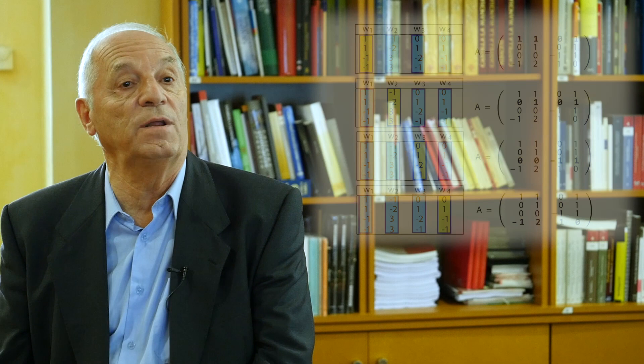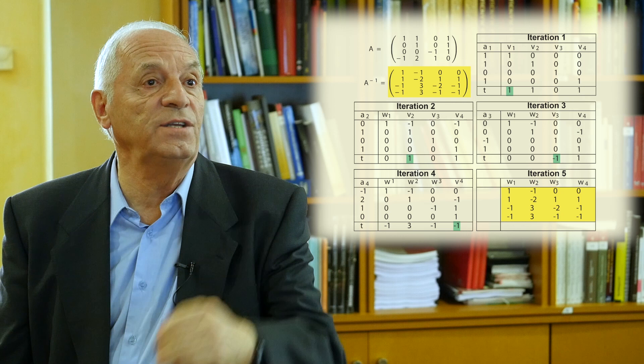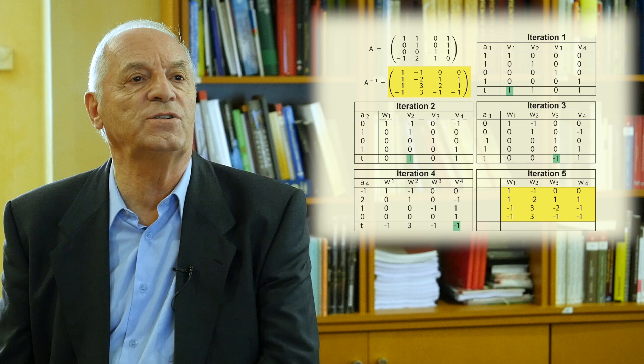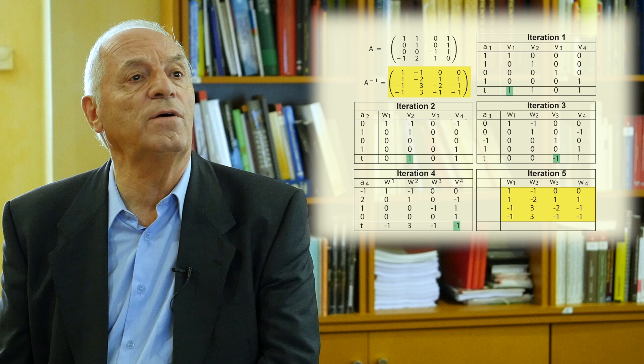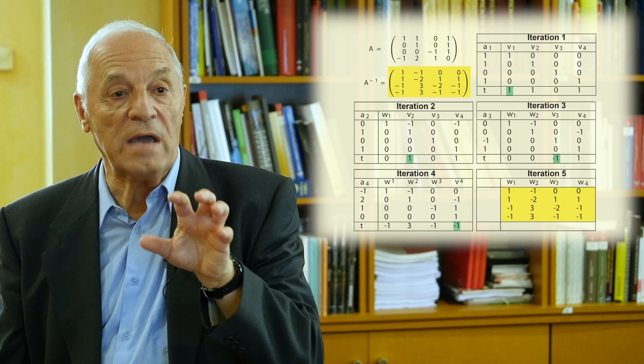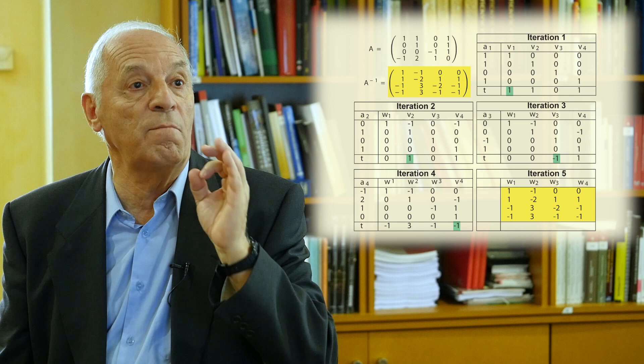This is a very interesting result. For example, consider the matrix A. Let's see how we can obtain the inverse of this matrix. We consider the first row, 1, 1, 0, 1, put it in A1 in the first iteration, and pivot. We take the second row, 0, 1, 0, 1, in iteration 2, and pivot. Then we include the third row, 0, 0, -1, 1, and pivot, and then the fourth one. Finally, after pivoting in iteration 5, we get a matrix in yellow color which is the inverse of matrix A.